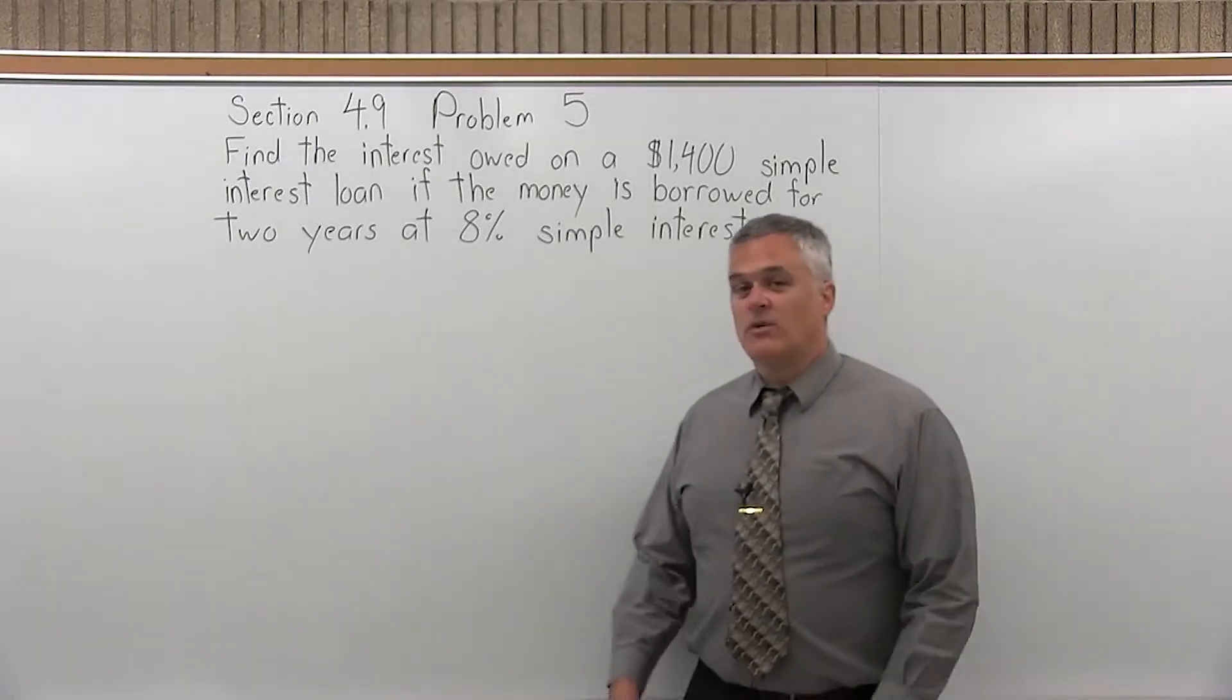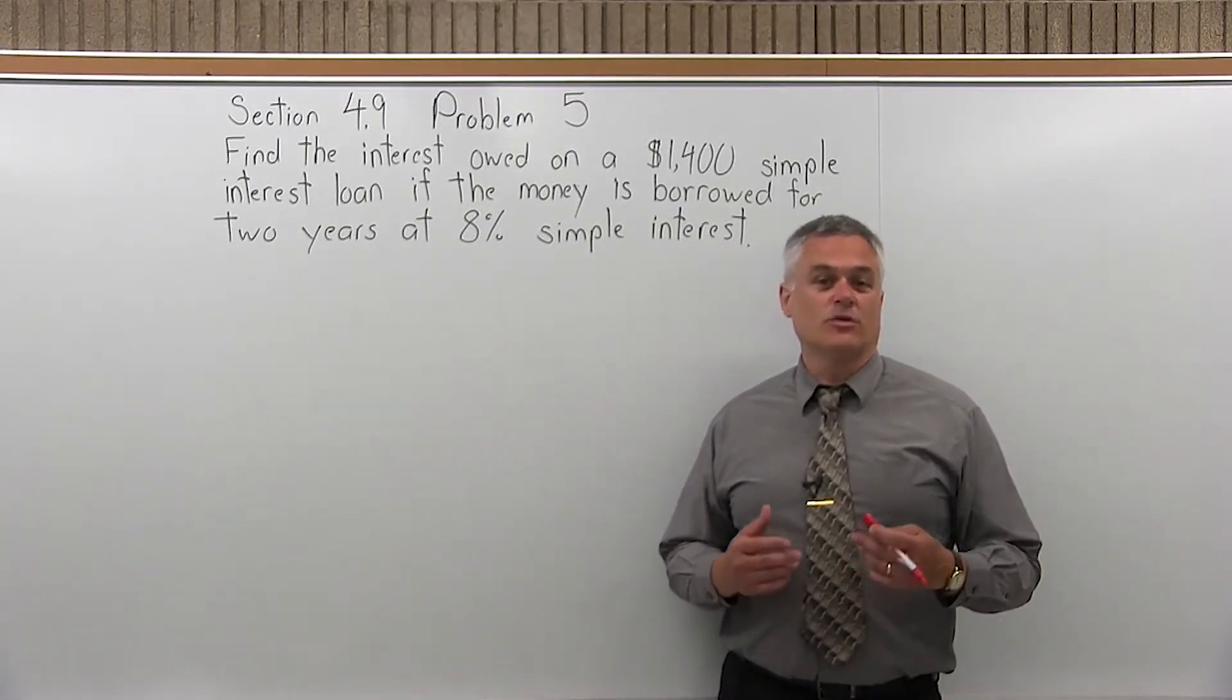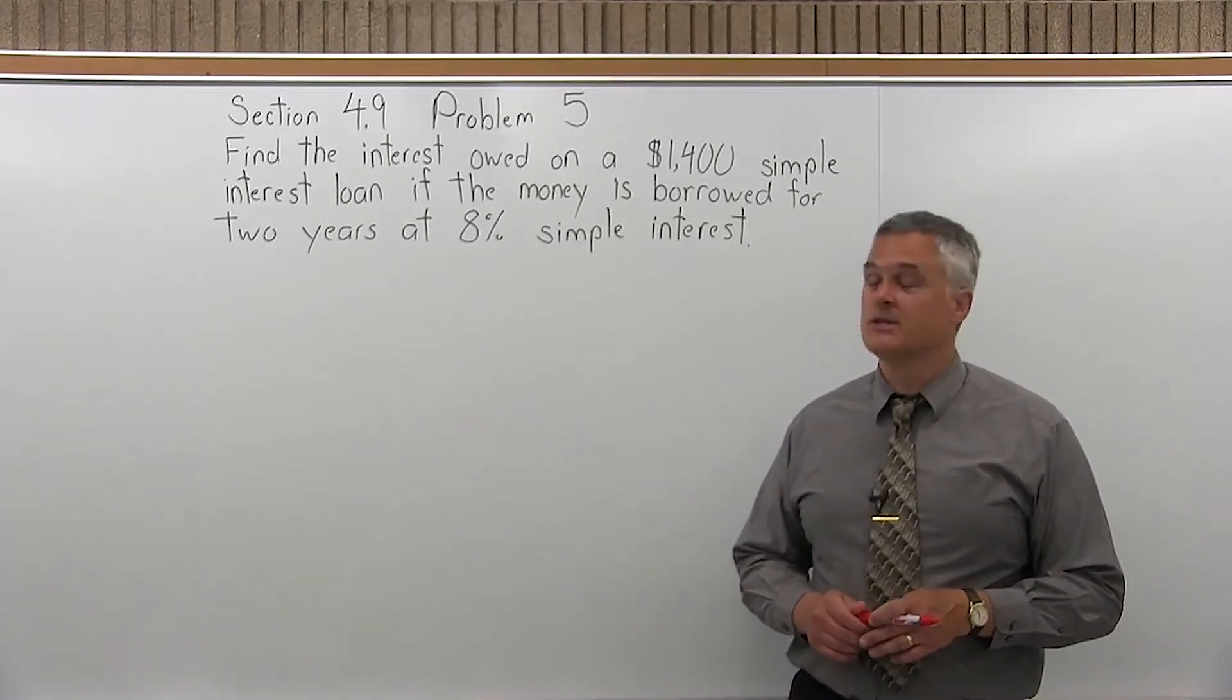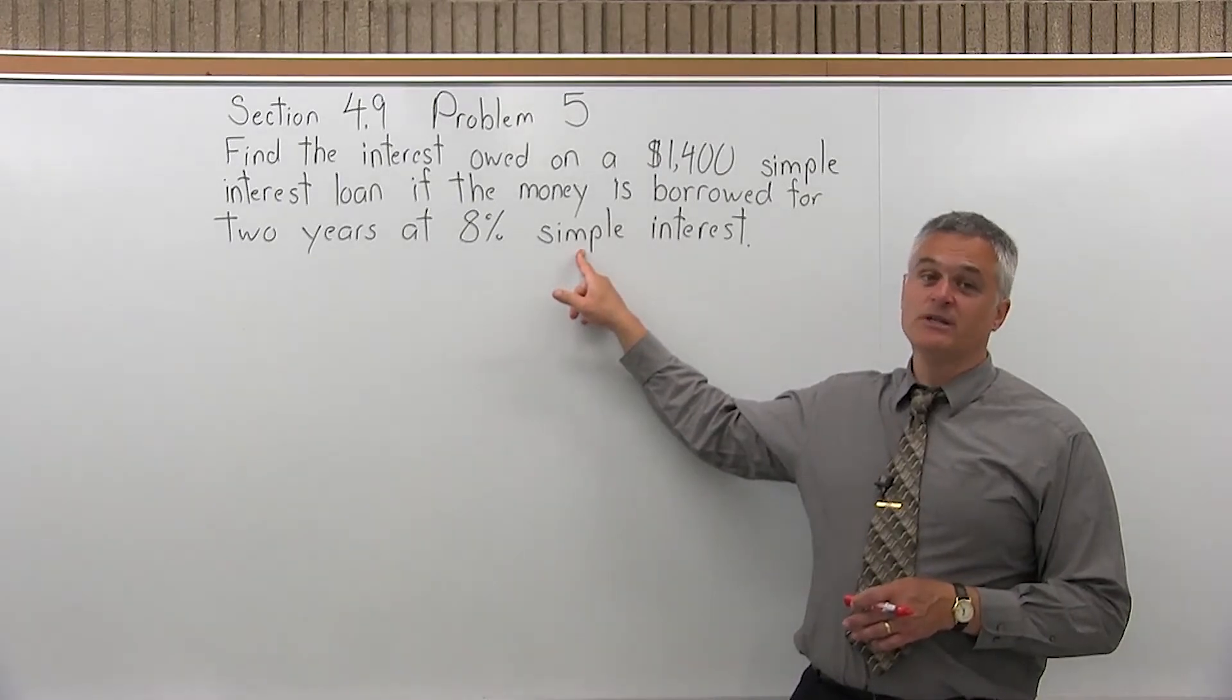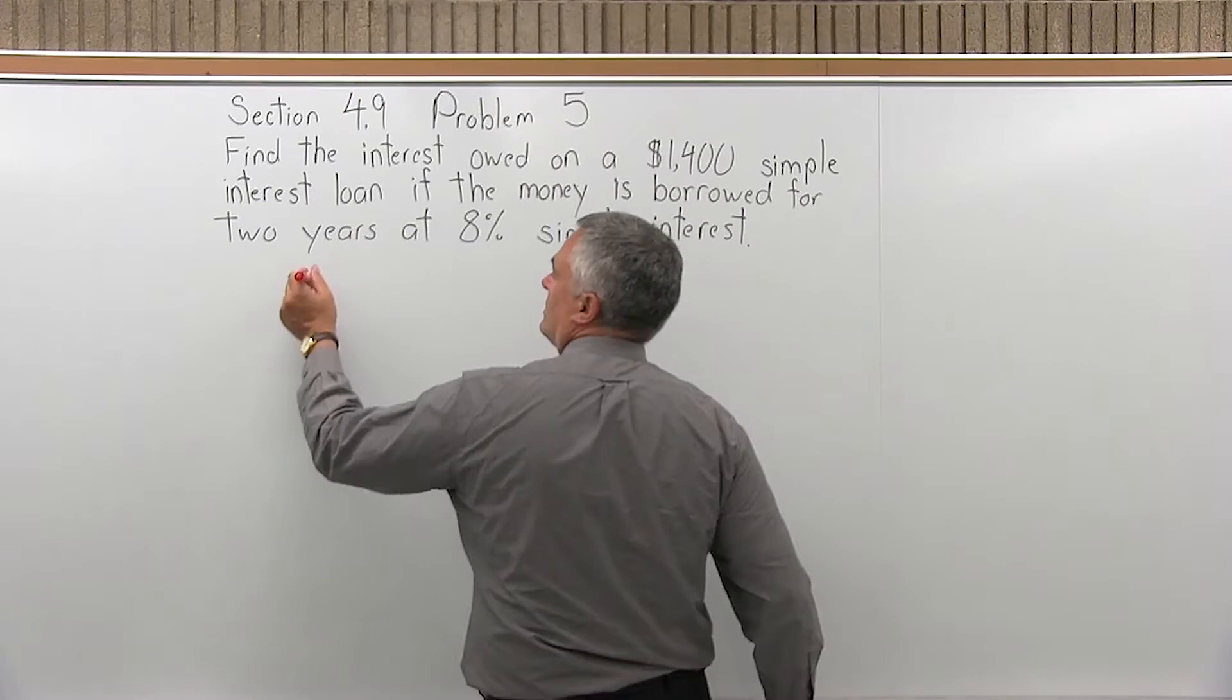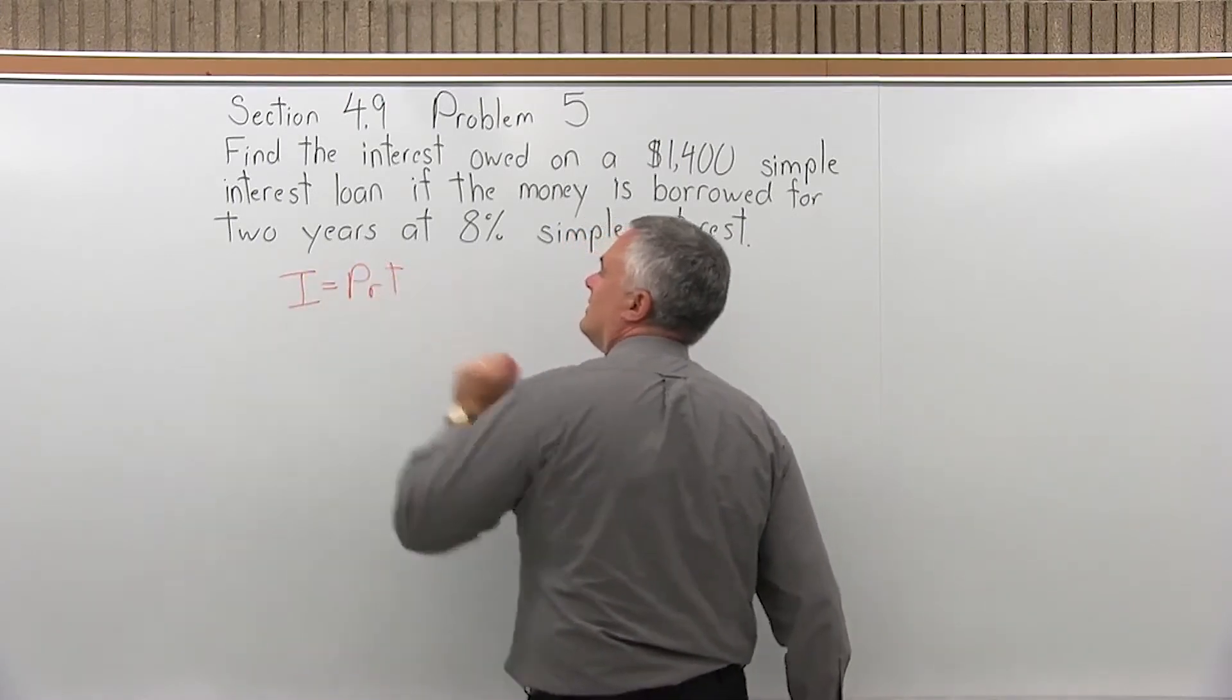First of all, with any of the questions from this section, what you need to do is determine which one of the two formulas you need to use. There's two formulas in this section. One is for simple interest and one is for compound interest. So as you read through the question, it should clearly state which one. And this one does. It says simple interest. So that's our starting point. We will start with I equals PRT, and we'll fill that in.